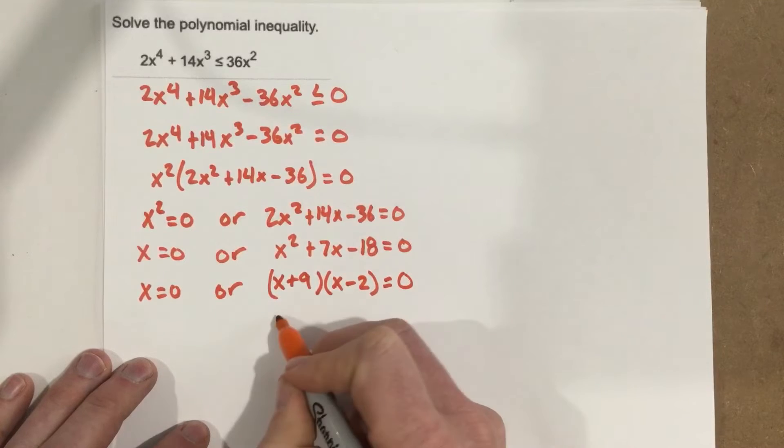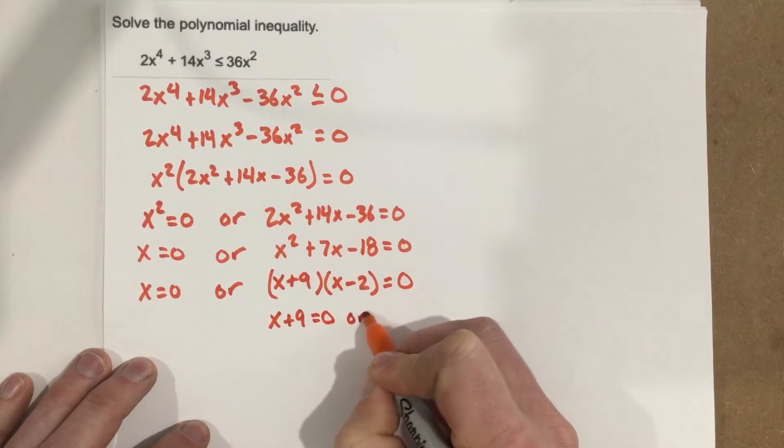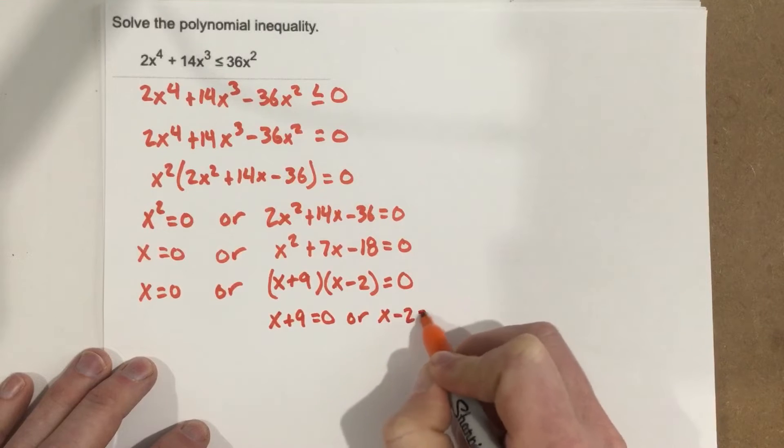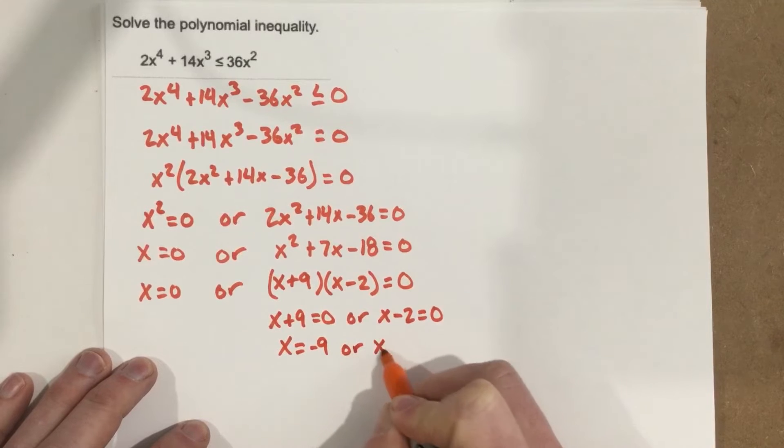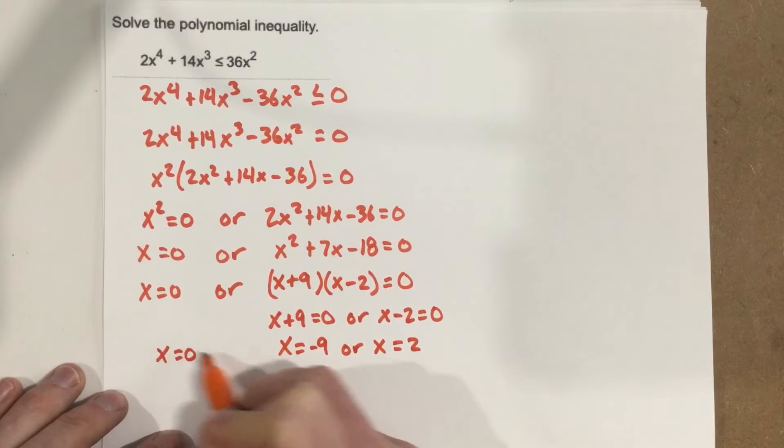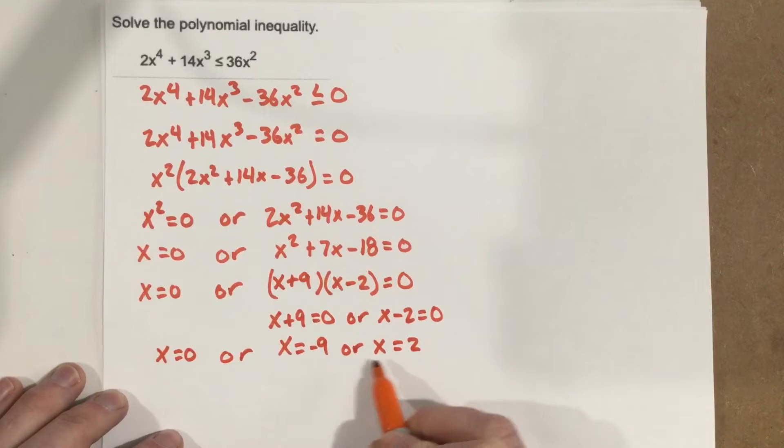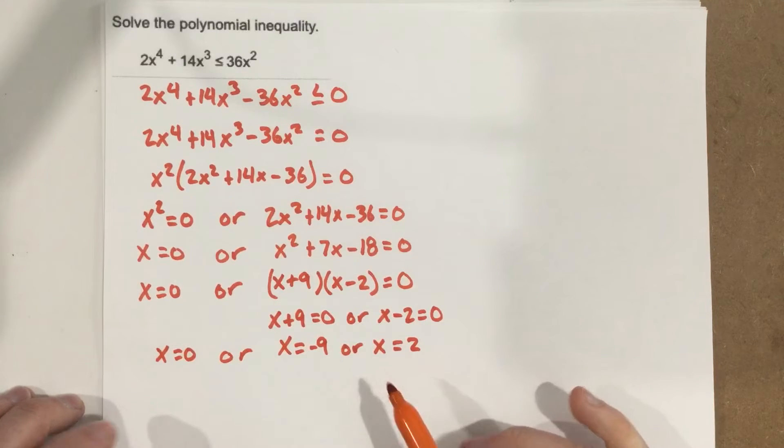Zero product property again. x plus 9 equals zero or x minus 2 equals zero. So x equals negative 9 or x equals 2. So we have x equals zero or x equals negative 9 or x equals 2. Now at this point, we've basically found the roots. Now we're ready to determine where our solutions are.